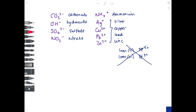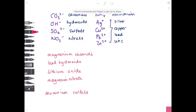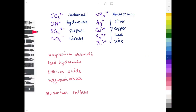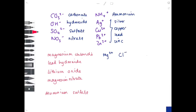Now for some examples. Starting with magnesium chloride: magnesium is in group two, so Mg²⁺. Chlorine is in group seven, so 8 minus 7 gives Cl⁻. They're not balanced — you have a 2+ and a 1− charge — so you need two chlorines. That's why the formula is MgCl₂. For lead hydroxide, both ions must be learned: Pb²⁺ and OH⁻.